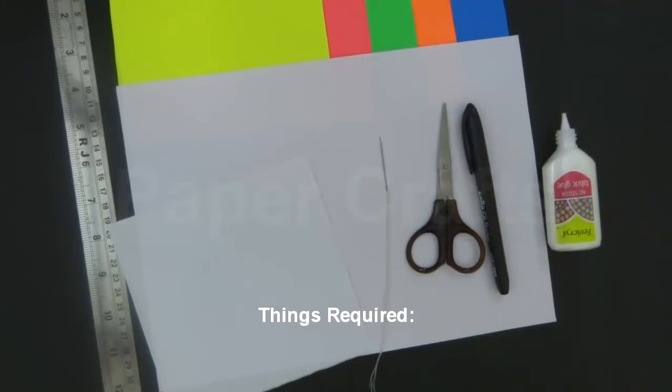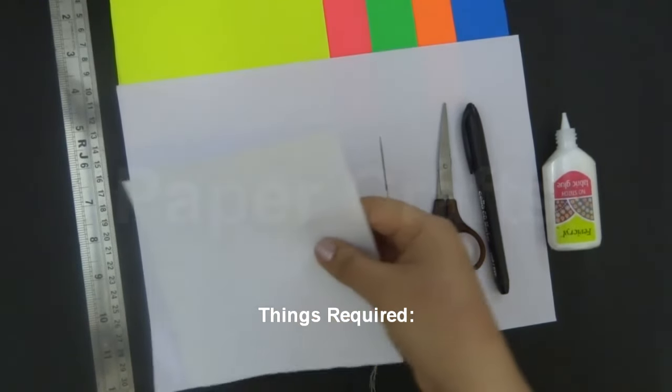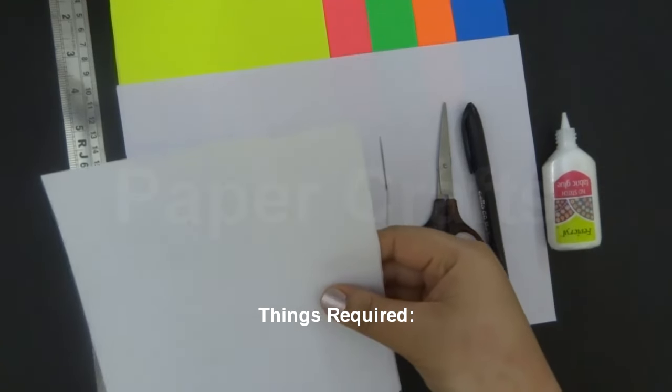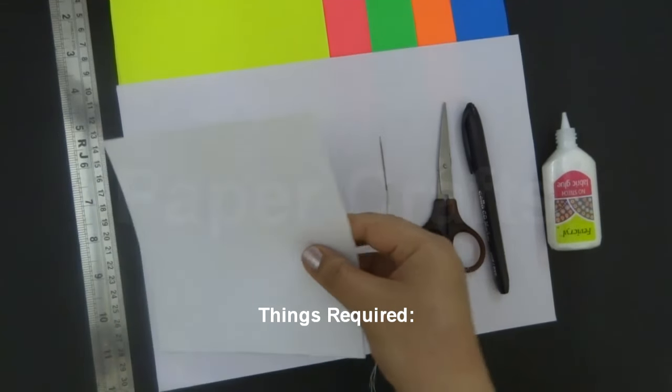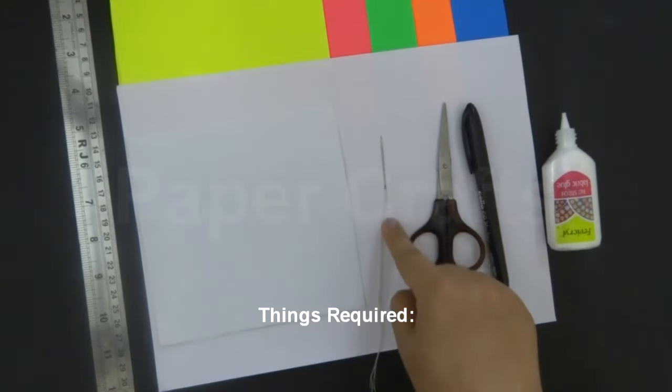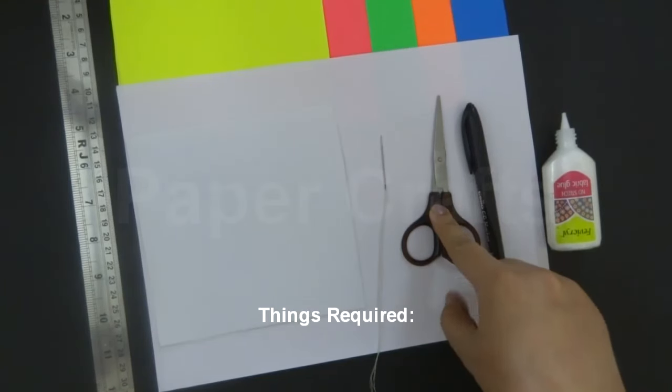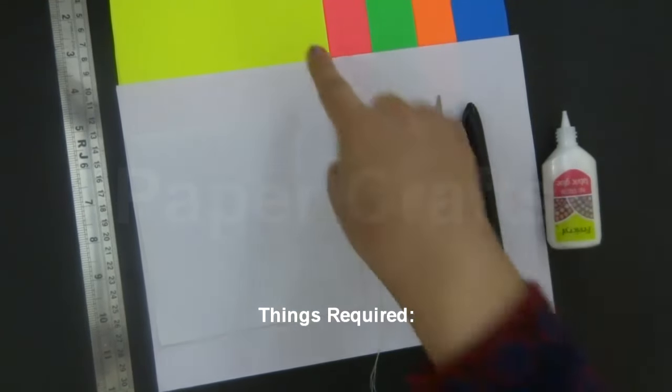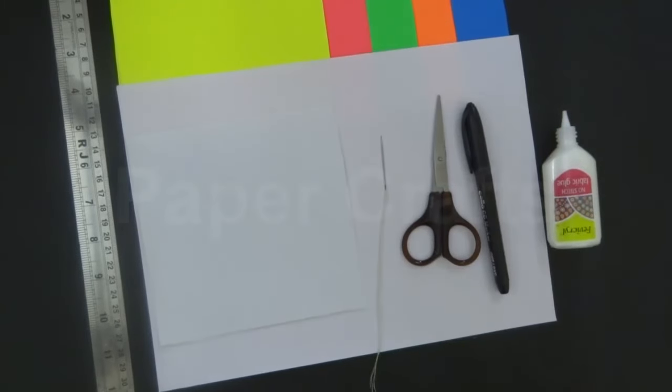For honeycomb ball you may require a scale, white sheets, one white square sheet of 6 by 6 inches, a needle and a thread, a pair of scissors, a marker, a glue and 20 different colored paper sheets.